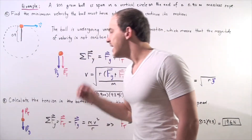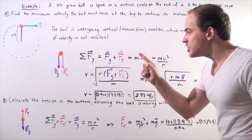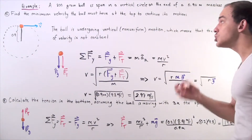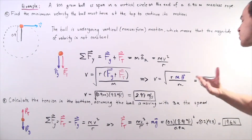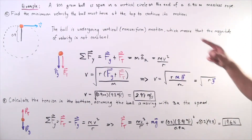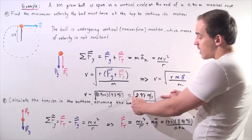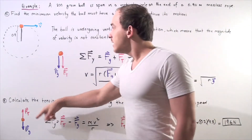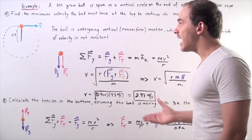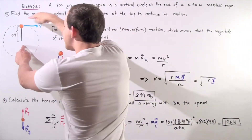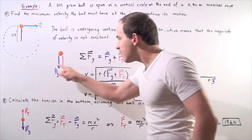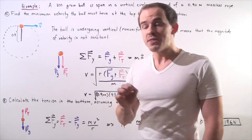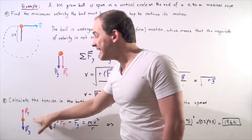Now for Part B: we want to calculate the tension in the rope when the object is at the bottom of the arc, assuming the ball is moving at 3 times the velocity from Part A — that is, 8.91 meters per second. Drawing the free body diagram at the bottom, we still have gravity pulling downward, but now the tension in the rope pulls upward, so the forces act in opposite directions.